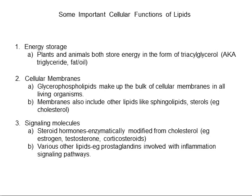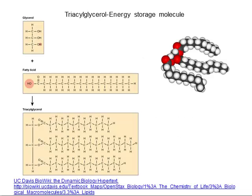Steroid hormones like estrogen, testosterone, and corticosteroids are synthesized from cholesterol, which is a lipid, and these regulate development, growth, reproduction, stress response, and other critical biological functions in animals. Prostaglandins are another class of lipids that play important roles in inflammation and immune response. We won't spend much time on their roles in signaling, though. Our primary focus will be on energy storage lipids and those in cellular membranes.